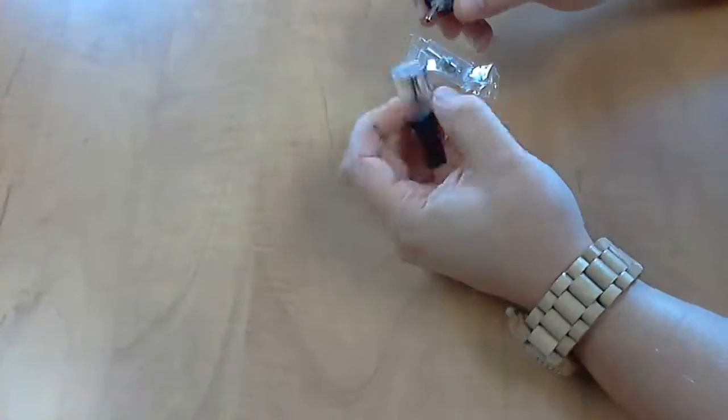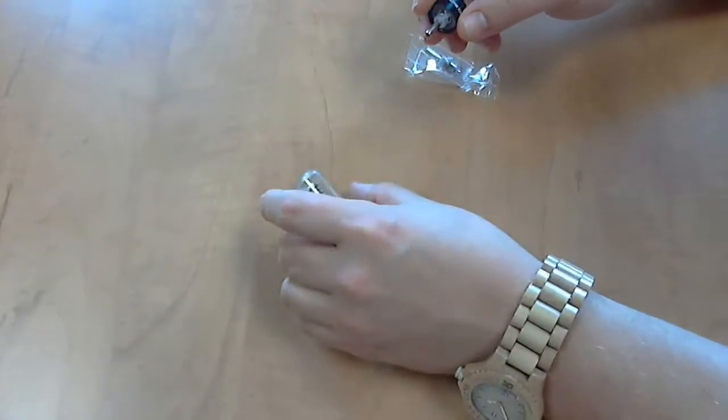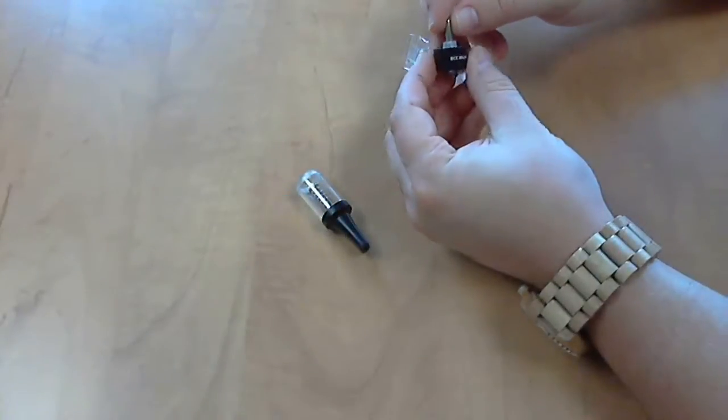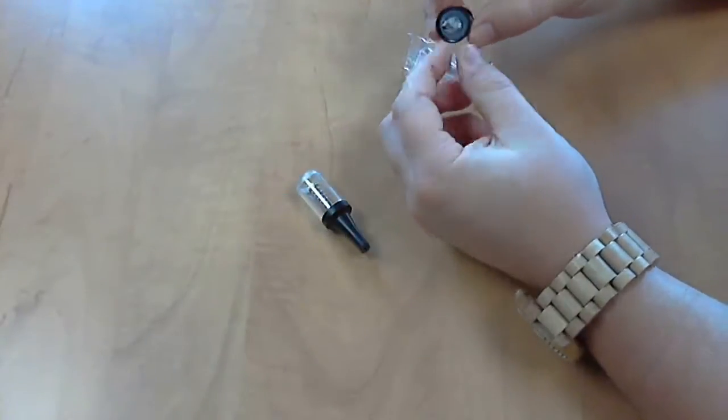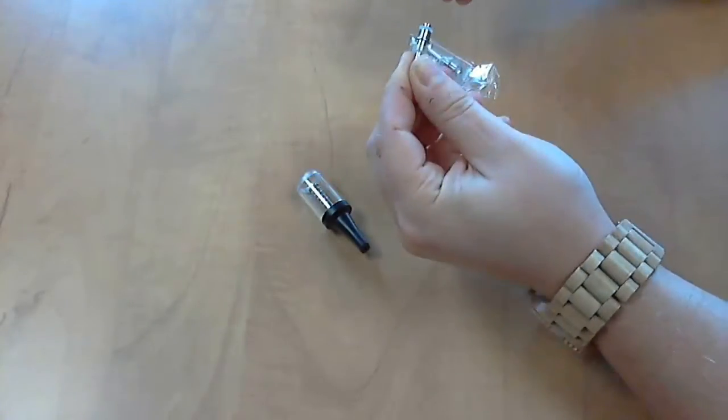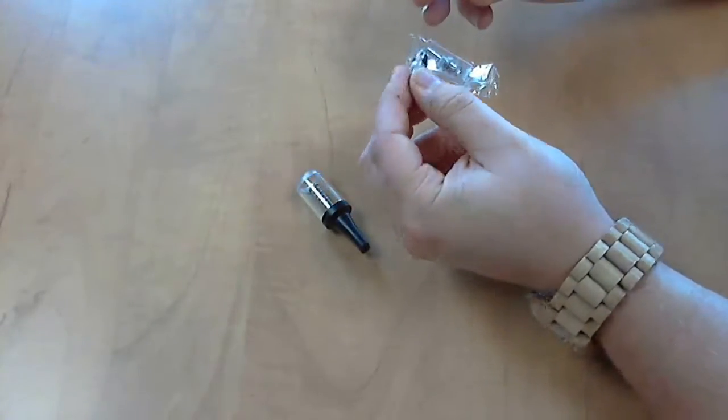So what you're going to do is just unscrew the tank and right here you see this is a heating coil. It just pops out like this. Give it a little tug, pull it out, there you go.